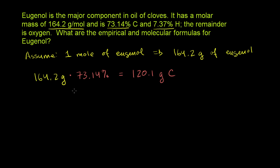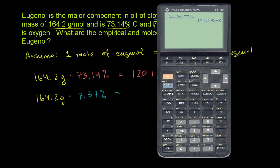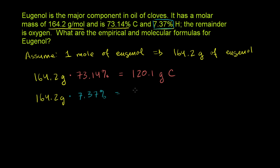Now let's do the same thing for hydrogen. We have 164.2 grams of eugenol times the percent composition of hydrogen, which is 7.37%. Using the calculator: 164.2 times 0.0737 gives us 12.1 grams of hydrogen.